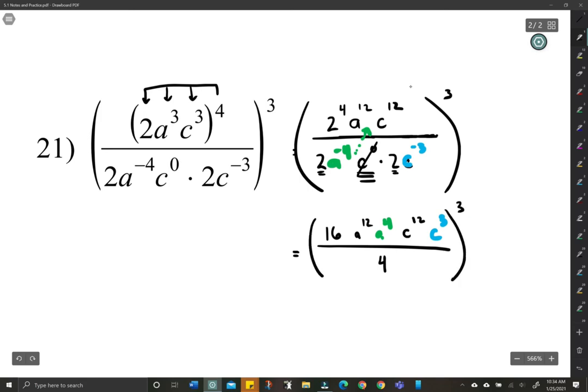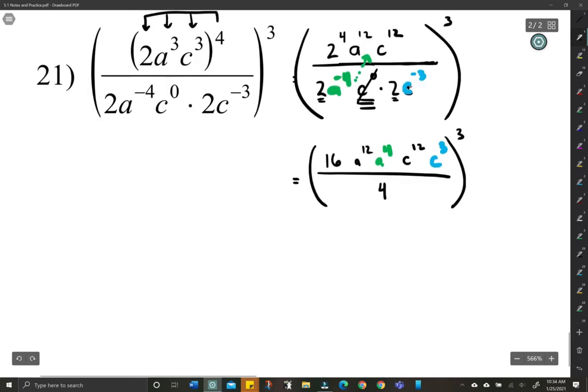Let's take a look here, then. So before we distribute that 3 still, 16 divided by 4 is just a regular old 4. Let's add together our a's. So a to the 16. c to the 12 and 3 is 15.